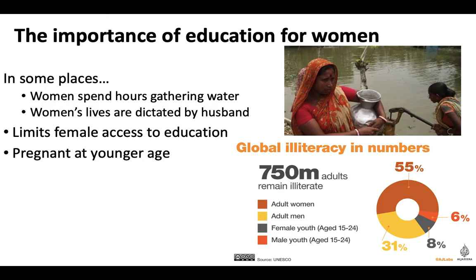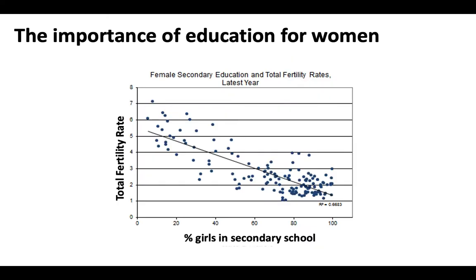Because when women don't go to school, they can get pregnant at a younger age, get married younger, and start younger families. And because they're starting younger, they have more time over the course of their life to have more babies. You can see this in data: on the x-axis we've got the percent of girls in secondary school, and on the y-axis we've got the total fertility rate — the average number of babies per woman in a population. As more women are enrolled in secondary school or higher education, the total fertility rate tends to drop significantly.